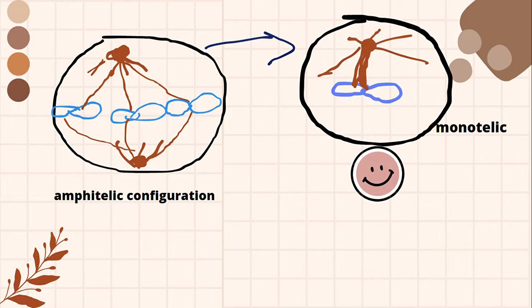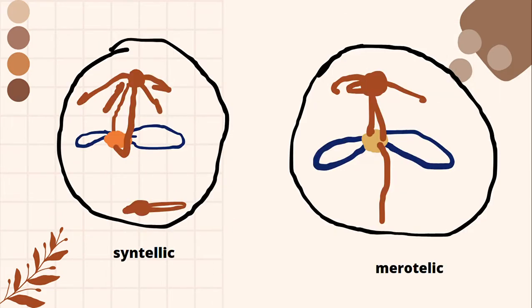Now moving towards another configuration like that syntellic configuration. Syntellic configuration, you can see that the spindle formation is from the North Pole and is attached to the upper side as well as bottom side, upper side portion and lower side portion, only for only North centriole.